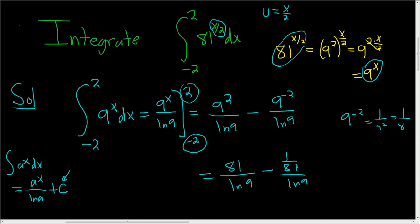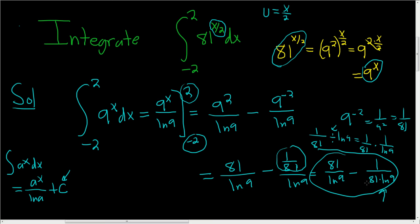And I guess the last thing we can do is make this look a little bit better. This is 81 over the natural log of 9 minus 1 over 81 times the natural log of 9. Just division there. 1 over 81 divided by the natural log of 9, old school notation. This is 1 over 81 times the reciprocal. When you divide, you multiply by the reciprocal, and we get this second term here. I hope that made sense.